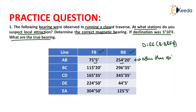When we subtract the backbearing 296 degrees 35 minutes and forebearing 115 degrees 20 minutes, the difference is also other than 180 degrees. So line BC is not free from local attraction. In line CD, the difference between backbearing and forebearing is exactly 180 degrees, so line CD is free from local attraction.